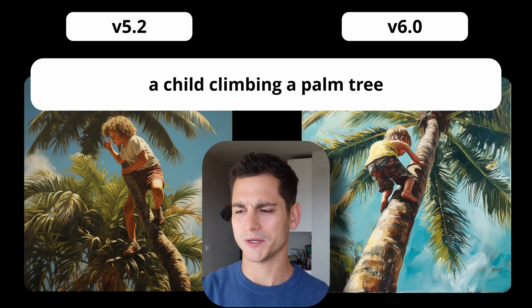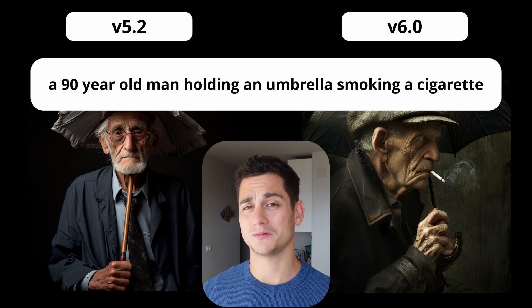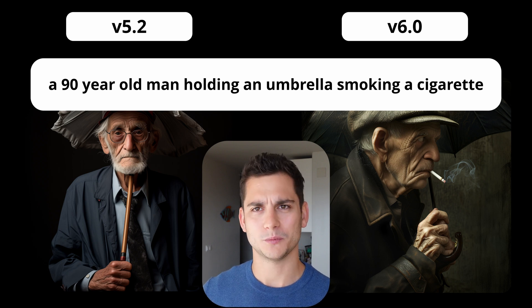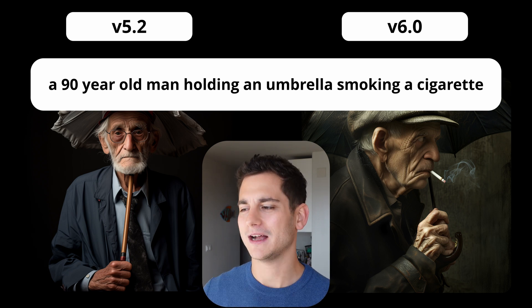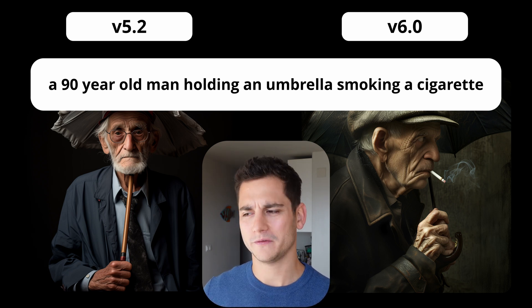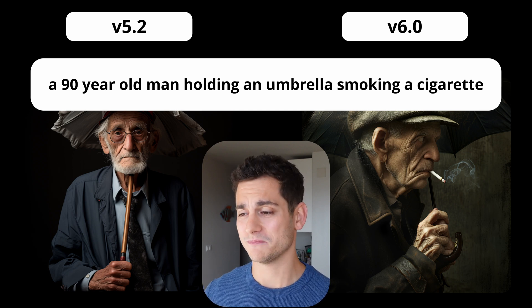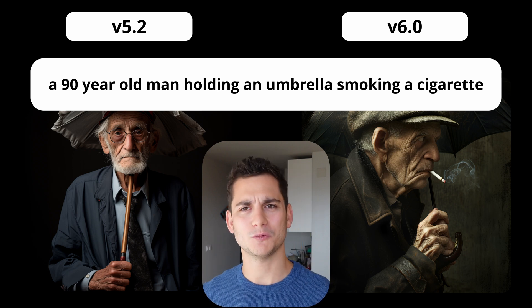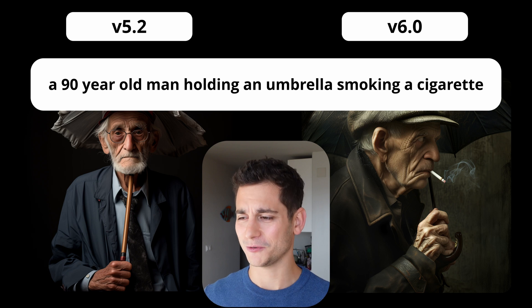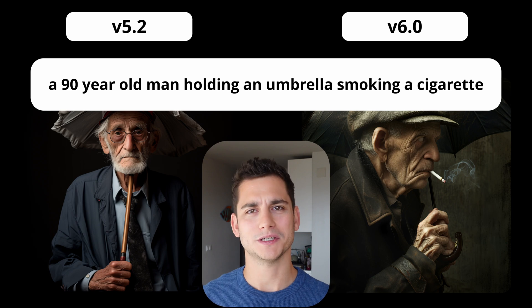The next picture is a man smoking a cigarette holding an umbrella. Choosing the best picture from 5.2 and a random one from 6.0: in 5.2 he seems to have punctured his throat with the umbrella and it looks more like a hat than an umbrella. The cigarette is nowhere to be seen — in other pictures the cigarette appeared in his nose or merged into his face. Midjourney was really bad at drawing cigarettes and people holding things. With version 6.0, the guy is just smoking his cigarette and holding an umbrella. Mission accomplished.